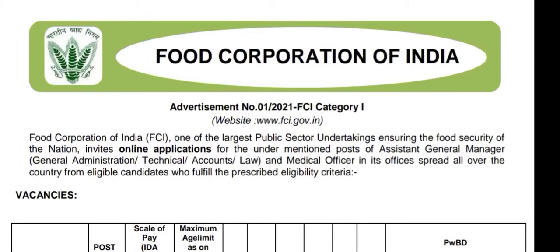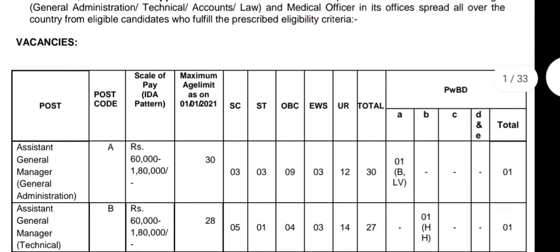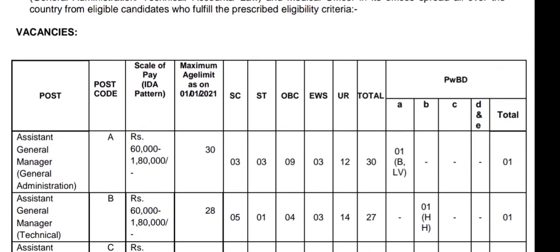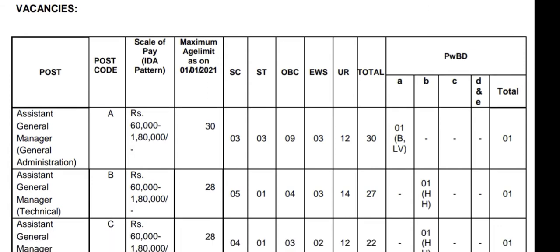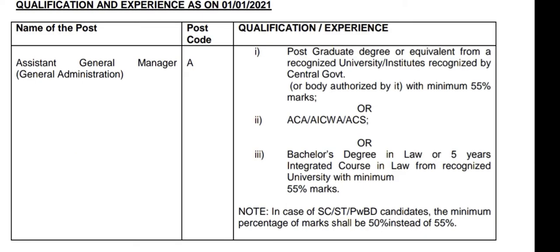Hello everyone, today a new update came from Food Corporation of India. There are several vacancies for Assistant General Manager, also known as AGM. For AGM General Administration, there are a total of 30 posts, and for AGM Technical, there are 27 posts, with different numbers for various disciplines.